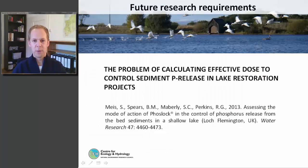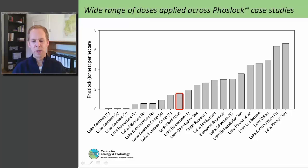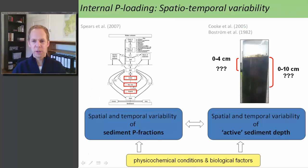From this research, I have identified some future research questions, all centered around the problem of calculating effective dose when using P-capping agents in restoration projects. This graph gives an overview of the doses of PhosLoc applied in whole-lake studies. In red, you can see Loch Flemington, where around two tons of PhosLoc were applied per hectare — roughly in the middle range. Applications in Germany have used more than six tons per hectare. The key question is how to calculate an effective dose to achieve site-specific water quality targets. The problem is that internal phosphorus loading is variable — both in space and in time.